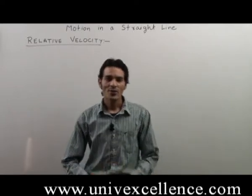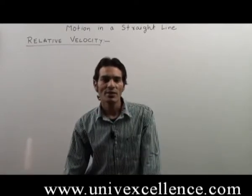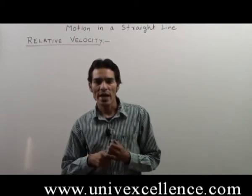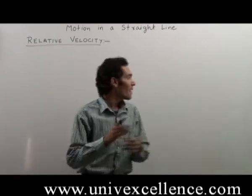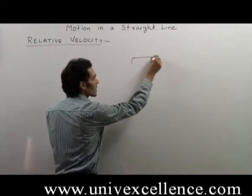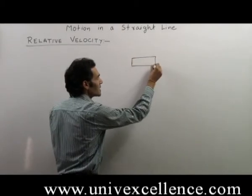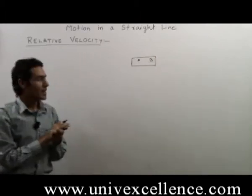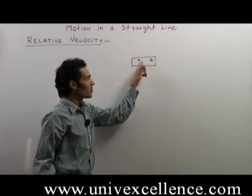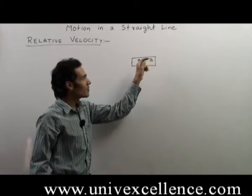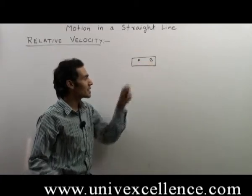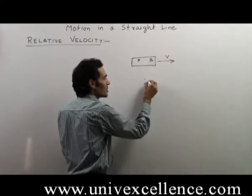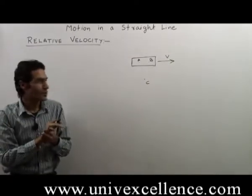Relative velocity: rest and motion are relative terms. There is nothing in this universe which is in absolute rest or in absolute motion. For example, when a train is moving and there are two persons sitting inside the train, person A and person B on their respective berths. With respect to A, person B is at rest, and with respect to B, person A is at rest. The train is moving in this direction with velocity V. Now, a person C is standing outside the train.